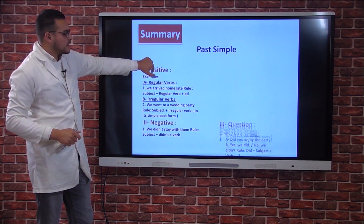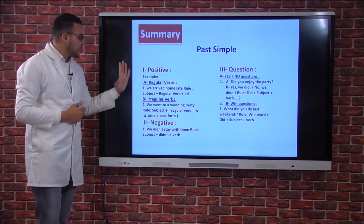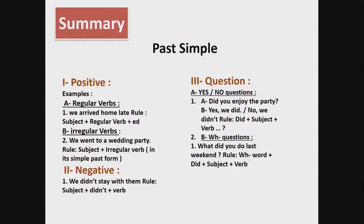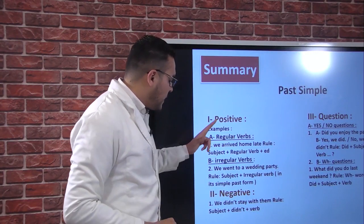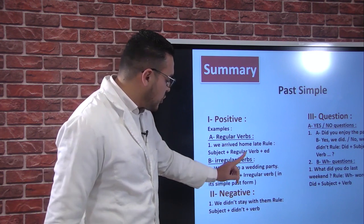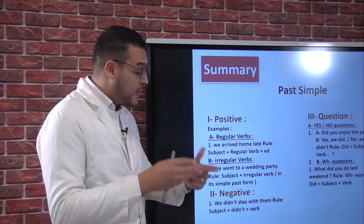Let's recapitulate what we've seen. For the positive form with regular verbs: verb plus -ed — for example, we arrived home late. Rule: subject + regular verb + ed. For irregular verbs, you need to check the list — and you need to learn it by heart. For the negative form, the auxiliary 'did' interferes: we didn't stay with them. Rule: subject + didn't + verb.